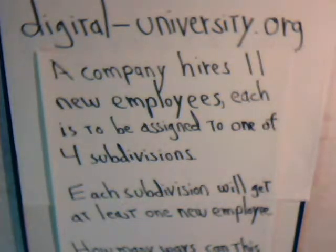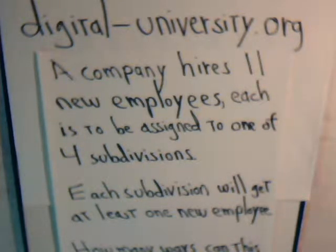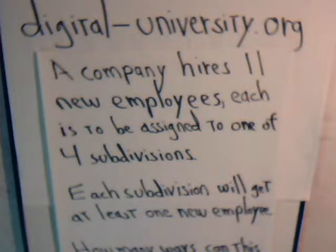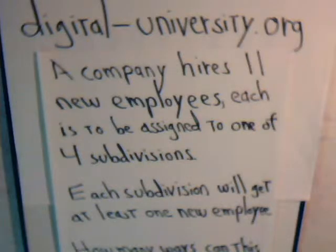This is video number six. What we're attempting to do is show how to use exponential generating functions to solve different types of permutation problems. In this video we're drawing upon the knowledge of our previous videos — both the five previous videos on exponential functions, and the 10 or 12 previous videos concerning ordinary generating functions and how we use those to solve difficult kinds of combination problems.